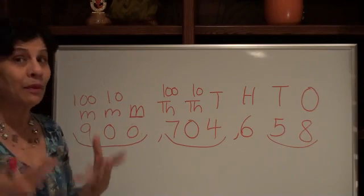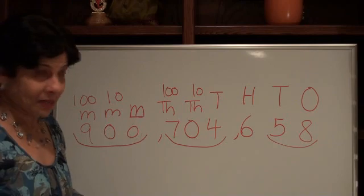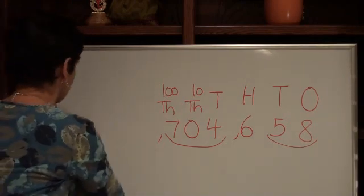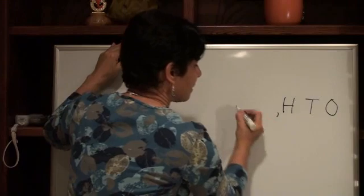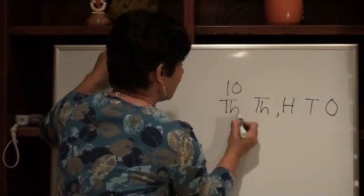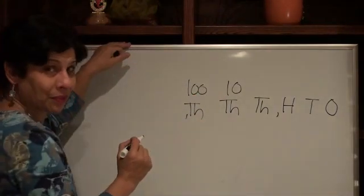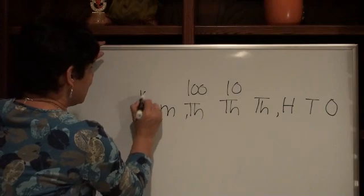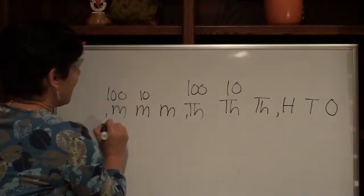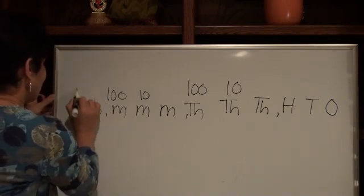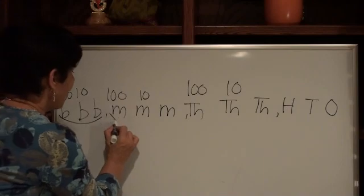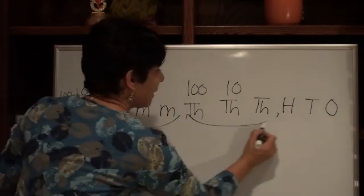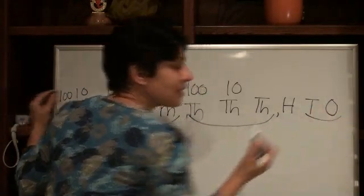Now let's go to even bigger numbers — billions. Let's review: ones, tens, hundreds, thousand, ten thousand, hundred thousand, then millions, ten millions, hundred millions. And we're really going to take this one big: billion, ten billion, and one hundred billion. So these guys sit in the billions boat, these in the millions boat, these in the thousands boat, and then we read this number by itself.